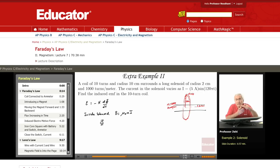Flux through each turn of the coil. It's the magnetic field B times the area. But which area? Now, the mistake would be to take the area of the coil itself.